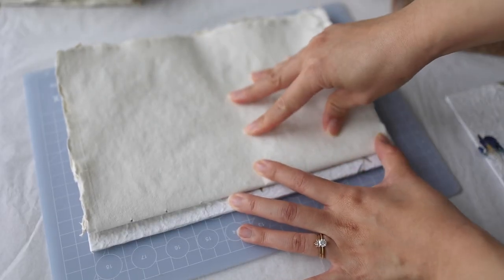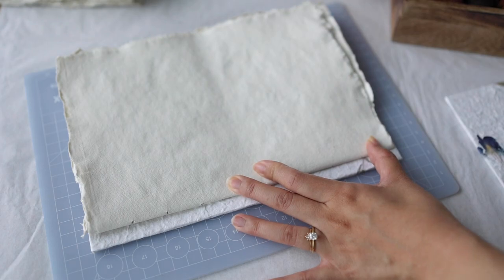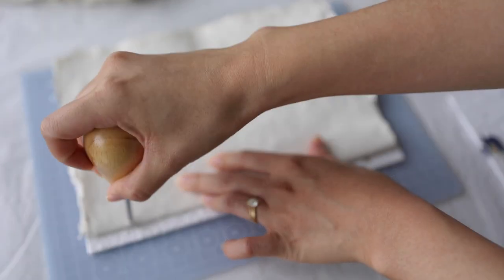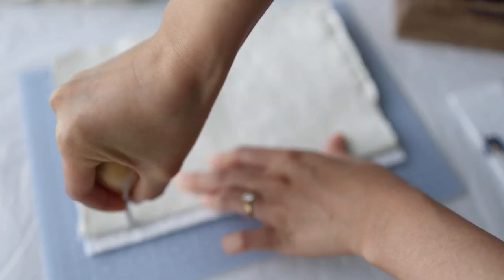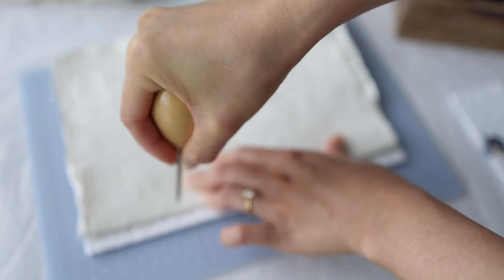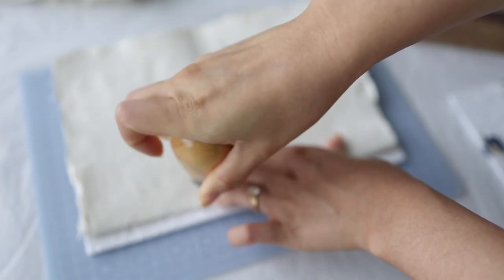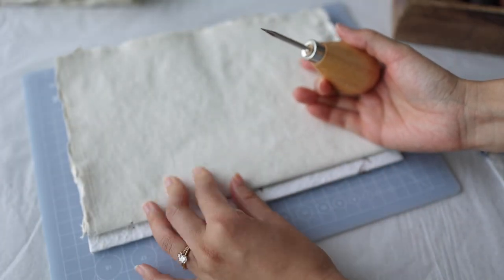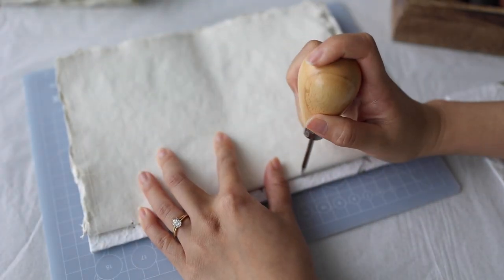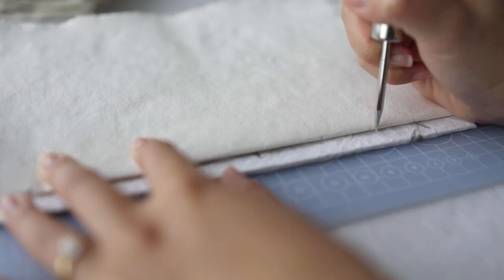Now after your book covers are dry, you want to poke holes into the same places as the signatures. So I'm measuring half an inch from the edge and then I'm poking the same holes as the signatures. That's three from the top and then three from the bottom.